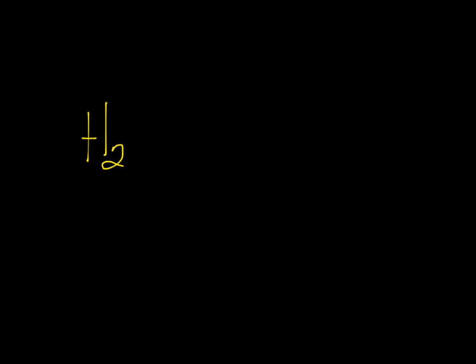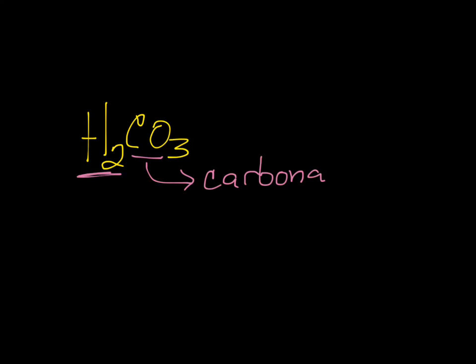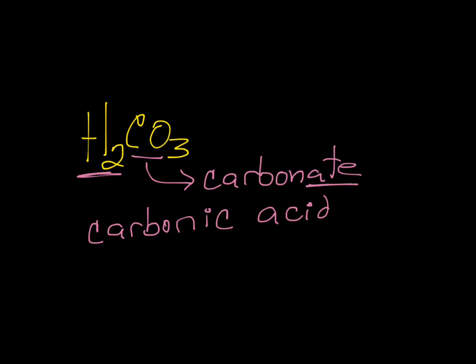Let's try another one: H2CO3. We know it's an acid because it starts with H. The anion CO3 is a polyatomic — it is carbonate, ending in "-ate." So we follow the "-ate" rule: drop the "-ate," keep "carbon," add the suffix "-ic." The H gives us "acid." So H2CO3 is carbonic acid.